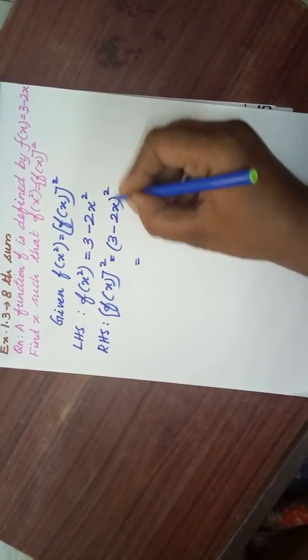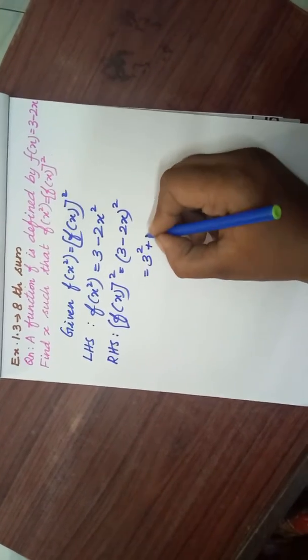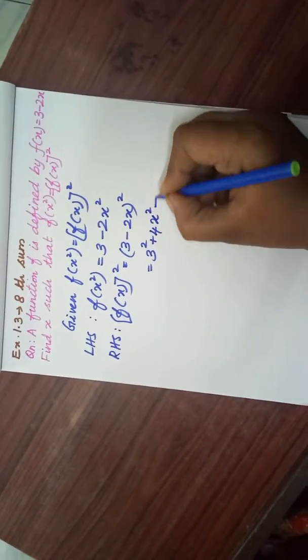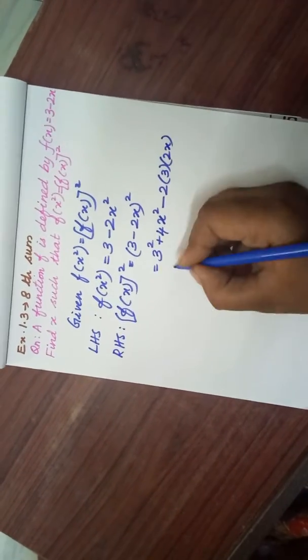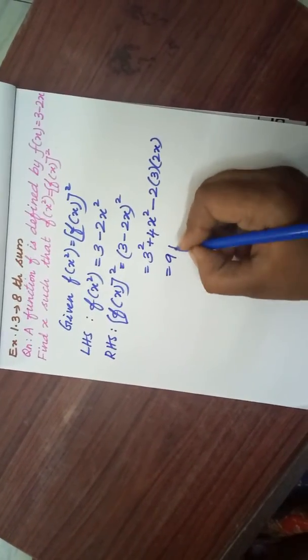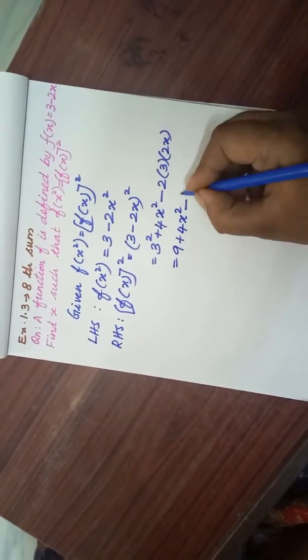Here (a - b)² = a² + b² - 2ab. So 2 × 3 × 2x gives us 9 + 4x² - 12x.